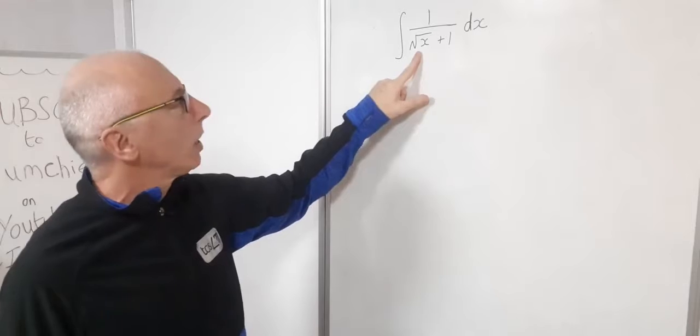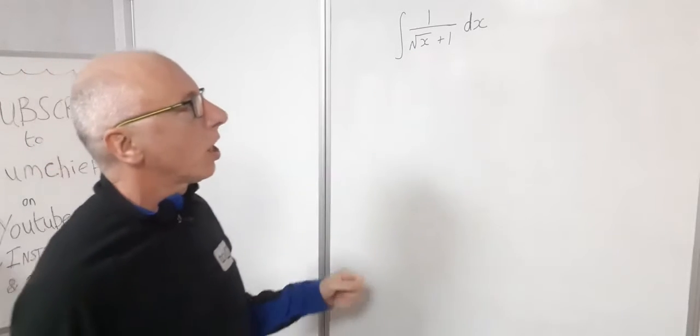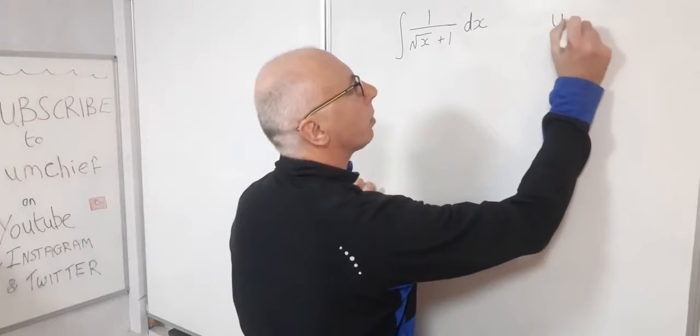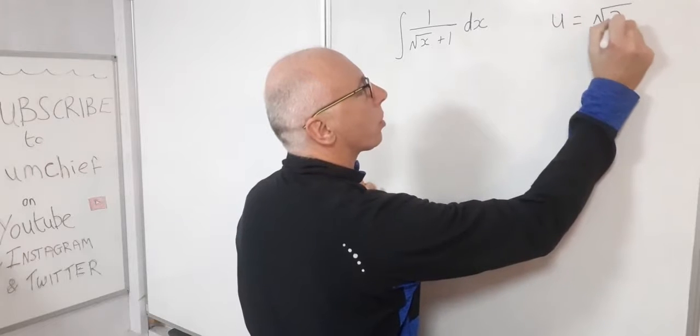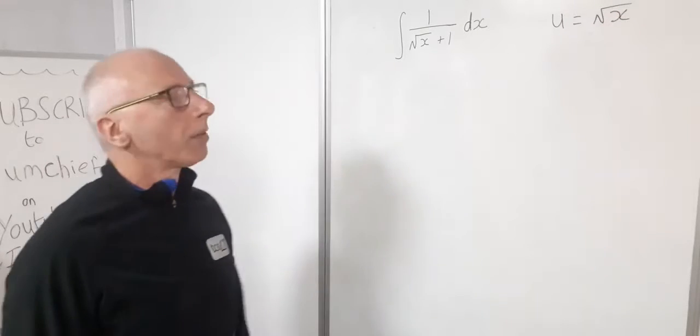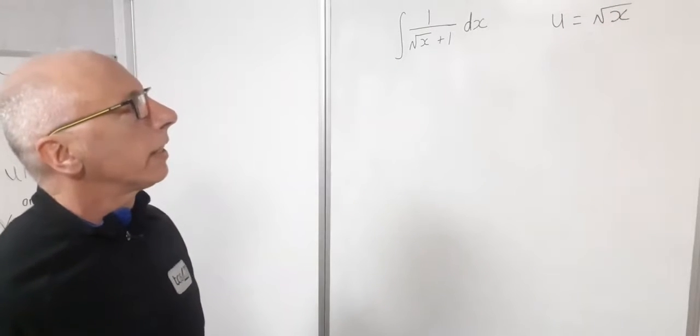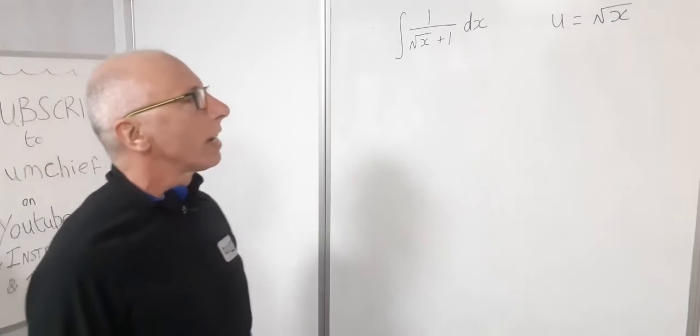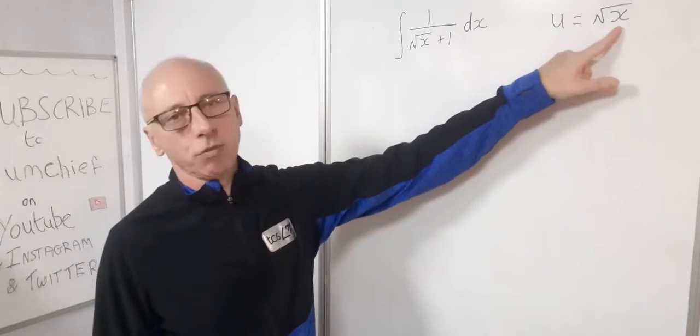For this video I'm just going to let u equal square root of x. So we'll start with that. So u equals square root of x. Now when we do u substitution the next stage is always to take the derivative.